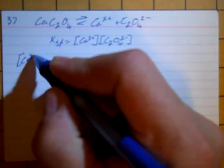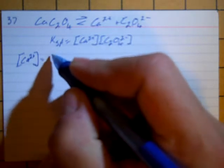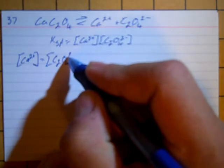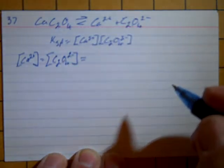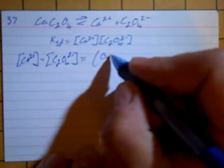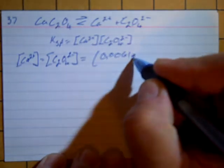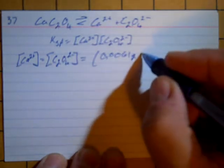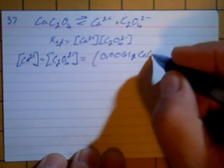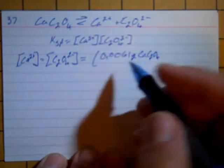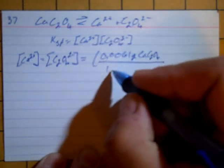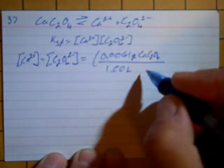And the concentration of calcium, which we said is going to equal the concentration of oxalate, is going to equal the amount that dissolved, which was 0.0061 grams of calcium oxalate. That's what we found in the dried residue. That was in 1 liter of solution.